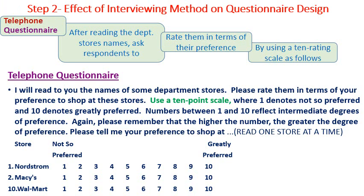Step number two: effect of interviewing method on questionnaire design. Telephone questionnaire: after reading the department store's name, ask the respondent to rate them in terms of their preference using a rating scale — where 1 denotes 'not so preferred' and 10 denotes 'greatly preferred.' The respondent selects a choice between 1 and 10. The interviewer reads one store at a time and the respondent is asked to indicate his preference.